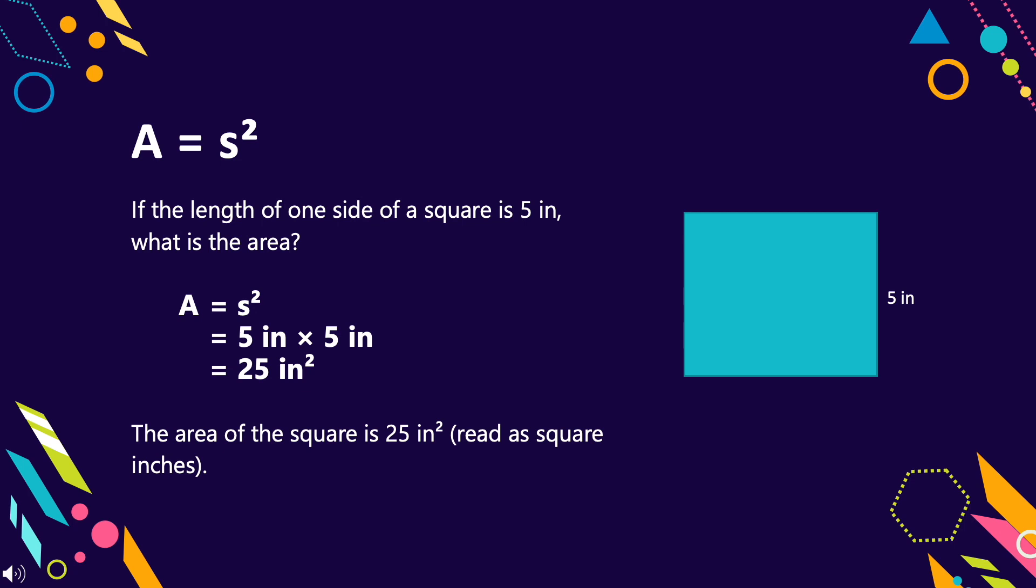Another example: if the length of one side of a square is 5 inches, what is the area? Here is our solution. A equals S squared equals 5 inches times 5 inches equals 25 square inches. Therefore, the area of the square is 25 square inches.